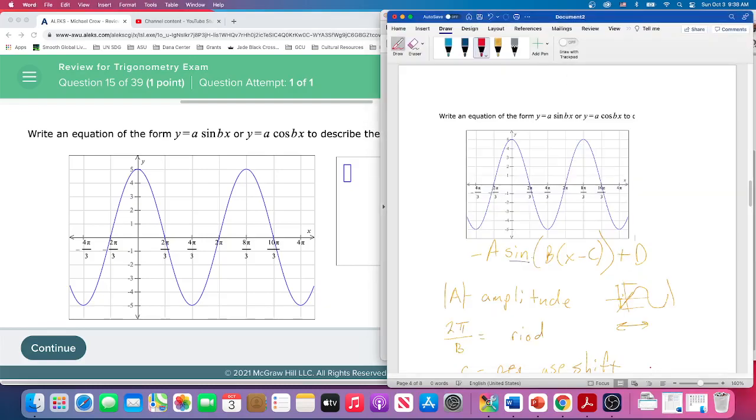I'm going to use the cosine function for this one because it's starting up here. Had it started at zero and went up, I would have gone with the sine. So I need something like this.